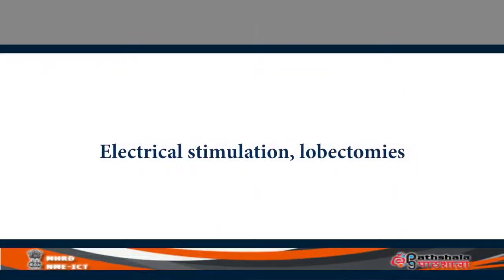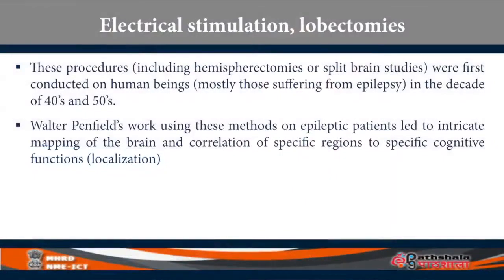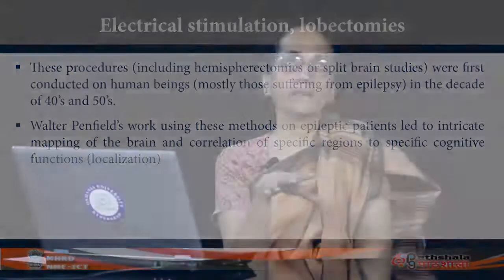Electrical stimulation was mostly done on people who had epilepsy. They did electrical stimulation experiments on these patients primarily to prevent abnormal electrical activity from spreading from one hemisphere to another. Walter Penfield was a well-known neurologist who used these methods on epileptic patients and did what is known as brain mapping — you have learnt about Brodmann areas in the first couple of modules. This is called electrical stimulation. Lobectomies were also performed: if there is a tumor in a particular lobe or hemisphere they removed it, observed changes in behavior, and concluded that the destroyed area was responsible for the now-absent behavior.